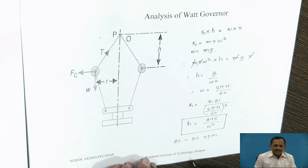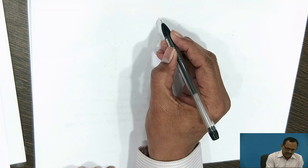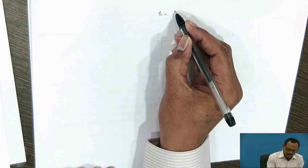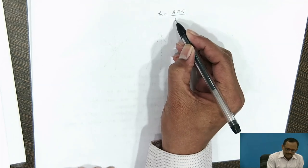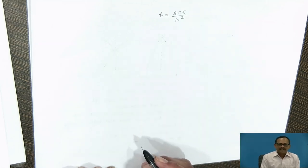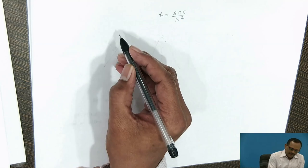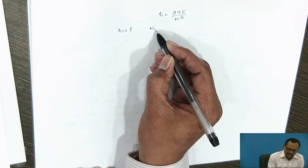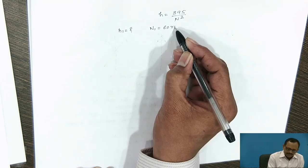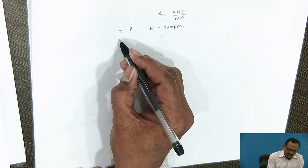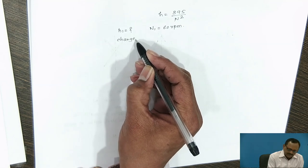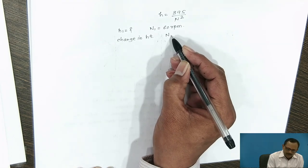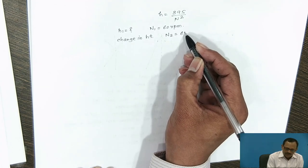In this case, you can also calculate the change in height of the governor due to change in speed. We have seen the expression for the VAT Governor: H equals 895 divided by N squared. Problem: Find the height of the governor when the VAT governor runs at a speed of 60 rpm, and also find the change in height when the speed increases to 61 rpm.